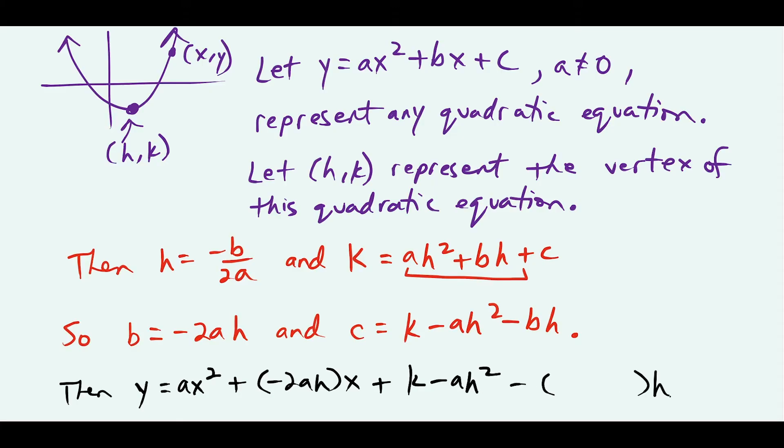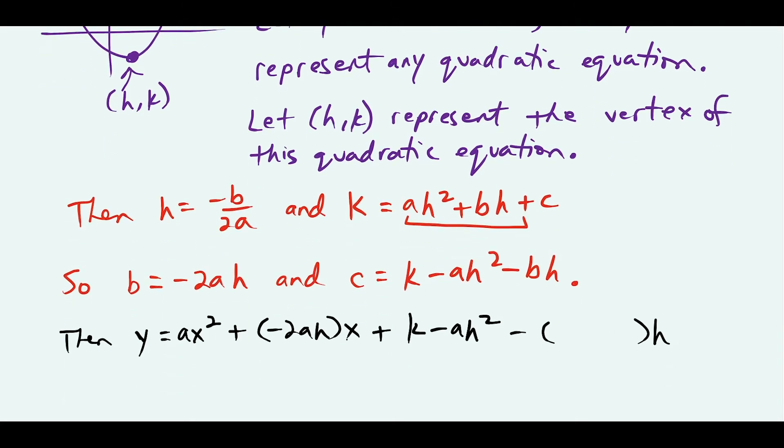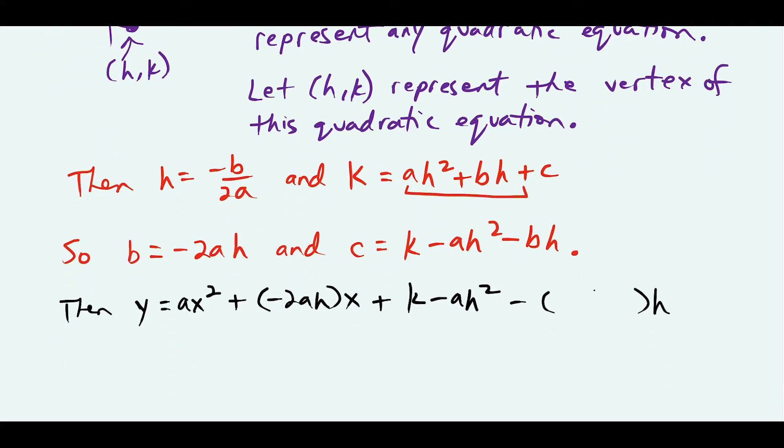But notice, instead of writing b, I left a space because I want to use this equation we have for b. b equals negative 2ah.